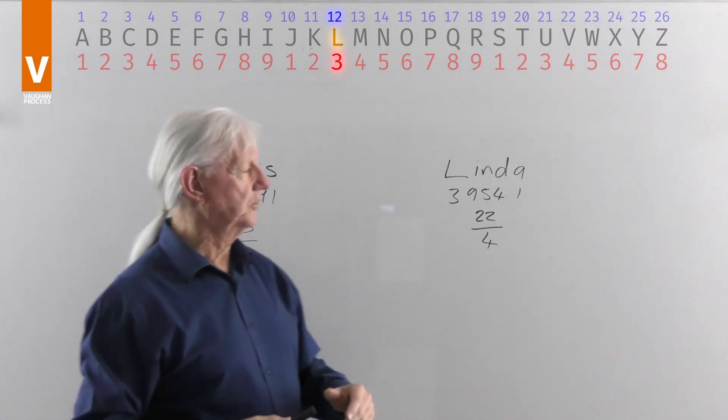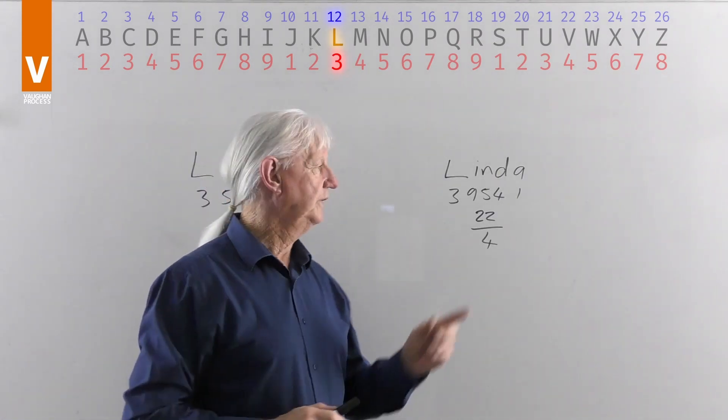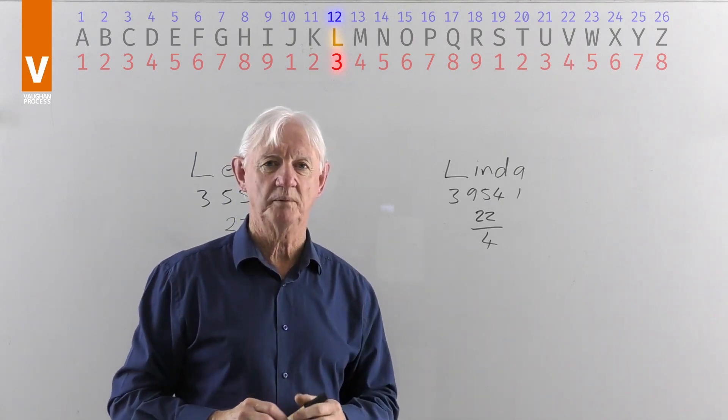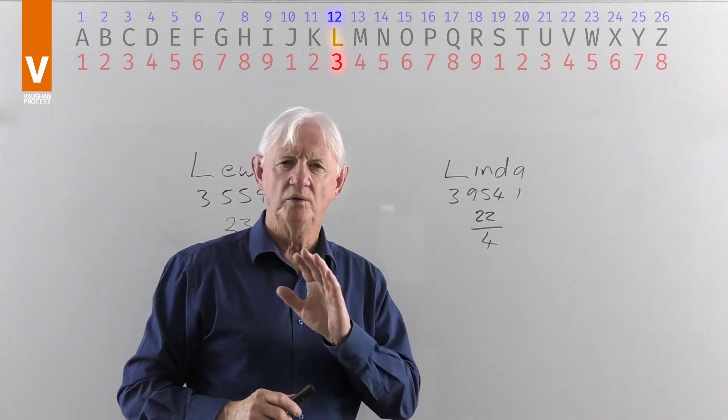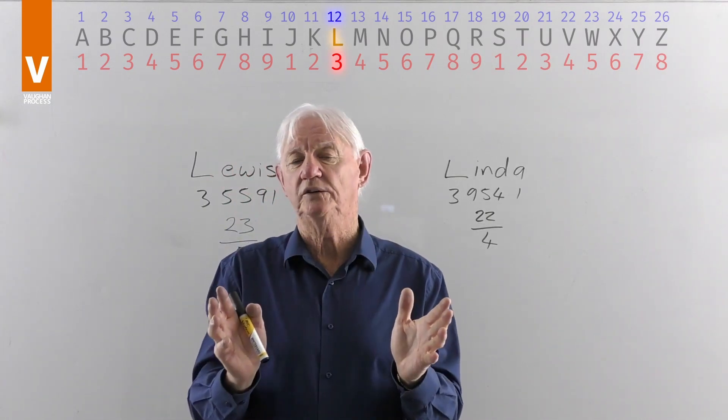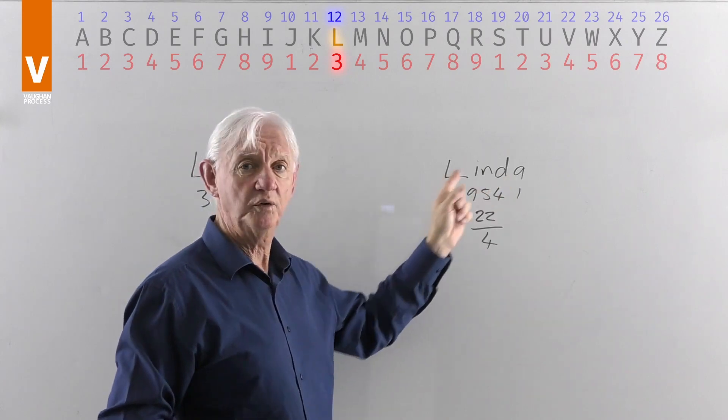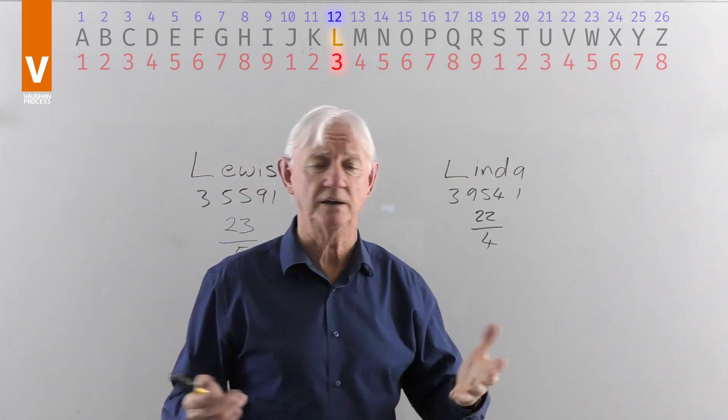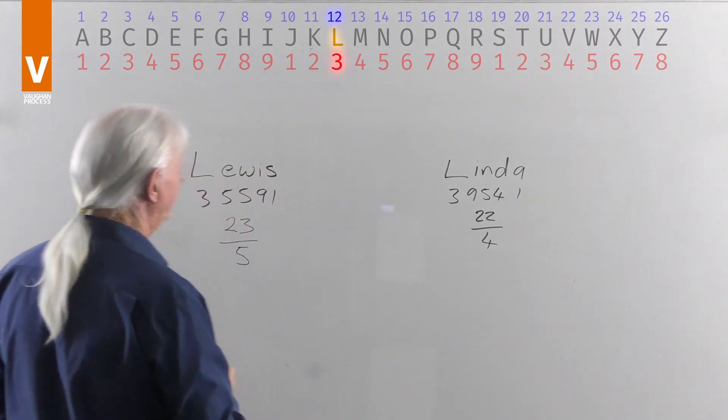Now, it's interesting just from memory, the name David and the name Linda spelt this way, both summed down to the number 22. Now, although they have the same number and therefore the same qualities in many ways, they have got different ingredients because the letters are like ingredients when you're making a cake. So what does it mean then?